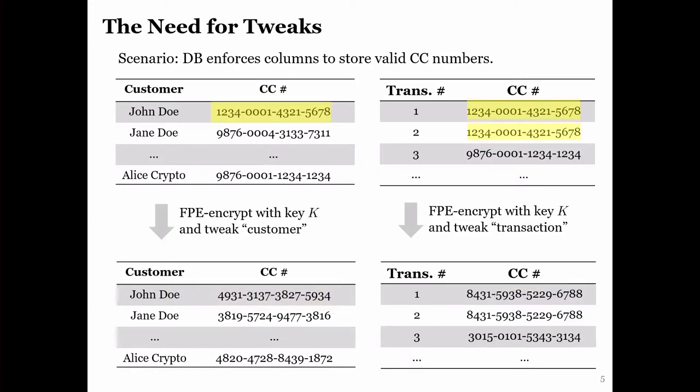In contrast, if you encrypt the two tables under different tweaks, then one can still realize that transactions 1 and 2 were made under the same credit card number. Now, there's no way you can link that to John Doe anymore. Therefore, using tweaks would improve privacy in the context of FPE.